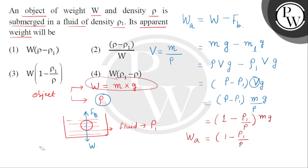And this is taken in the bracket. Now we are taking Mg as W. So correct answer will be option number 3. Thank you.